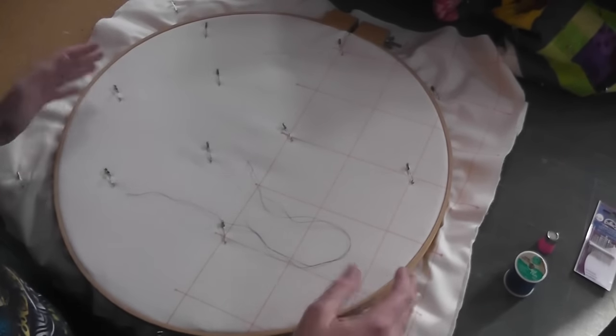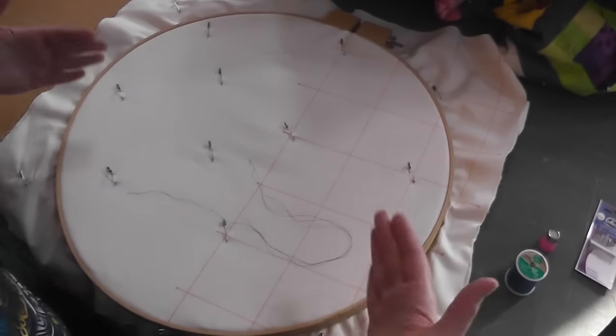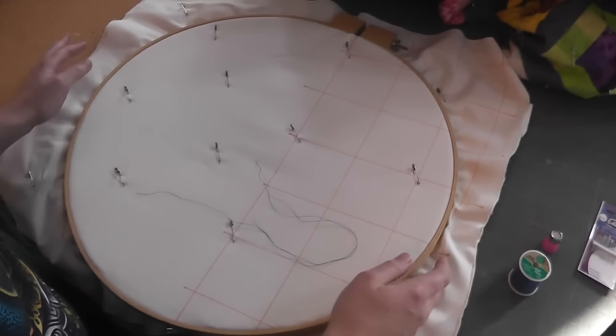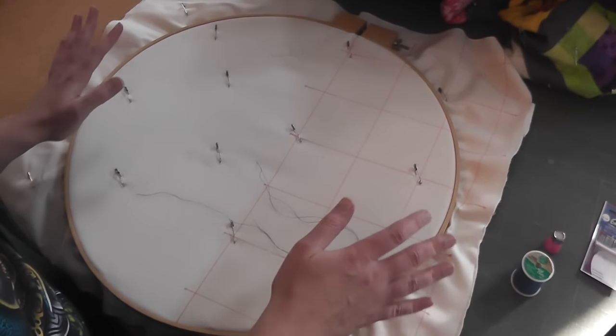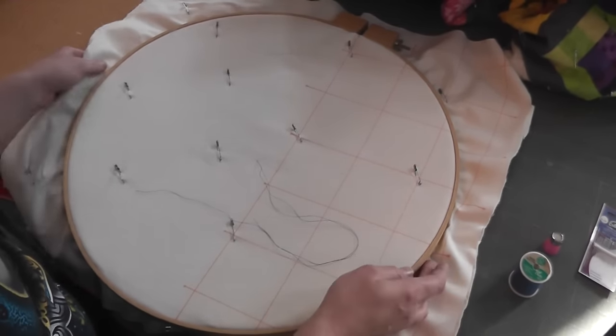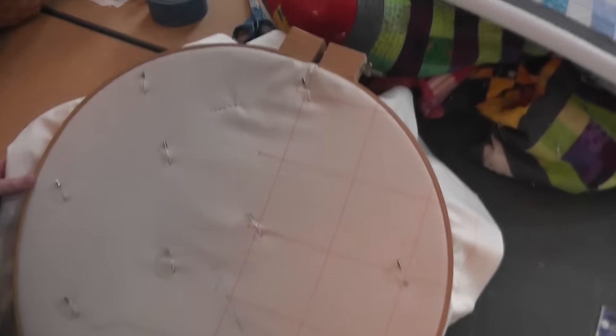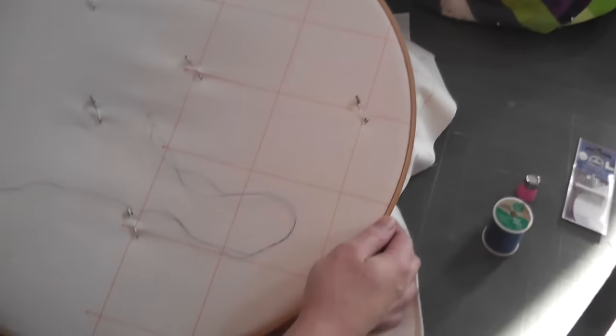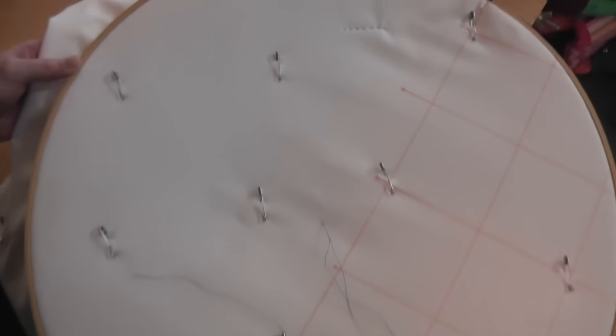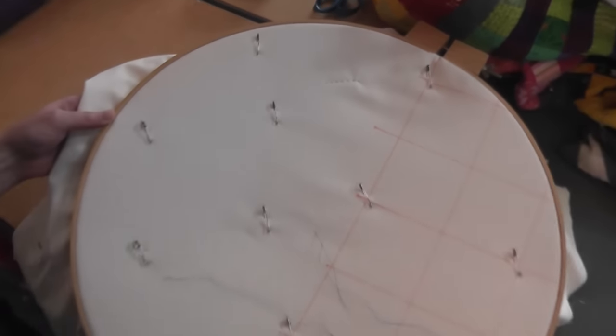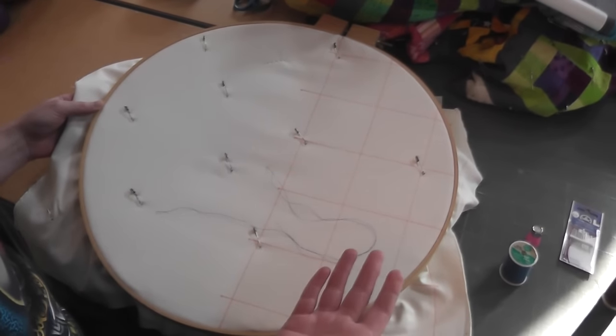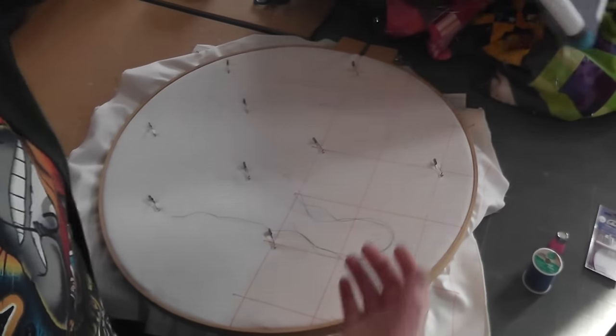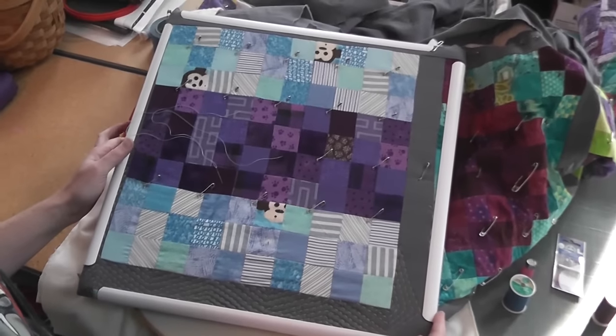First let's talk a little bit about some of the tools that you need. For the way that I quilt I use a hoop or a frame. Some people quilt without it but the method that I'm going to show you uses a frame. So this one is just like a giant embroidery hoop, really inexpensive and easy to find. The only drawback to it is that it's round and a lot of times your quilts will have square blocks so sometimes it's handier to have a frame like this that's a square frame.